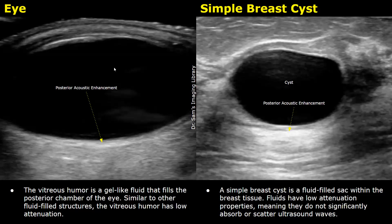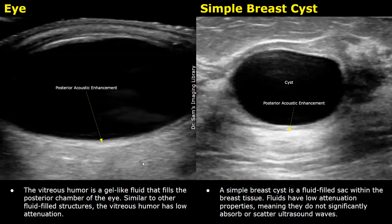These are images of the eye and a simple breast cyst. The eye is a fluid-filled structure; the vitreous humor is a gel-like fluid that fills the posterior chamber of the eye. It has low attenuation, so when ultrasound waves pass through it they lose very little energy. They don't reflect and easily pass through the fluid, ending up with high intensity posterior to the eye. These high-intensity waves reach the back of the eye and reflect when they reach solid tissues. The echoes received by the machine have high energy, leading to their bright appearance — this is acoustic enhancement. The breast cyst is also a low-attenuation structure, so posterior acoustic enhancement is noted behind the cyst.